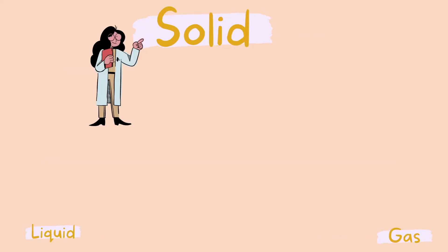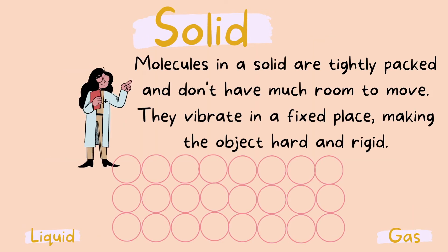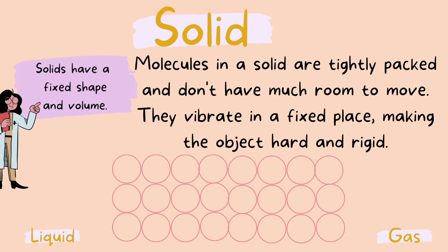So let's look at a solid first. Molecules in a solid are tightly packed and don't have much room to move around. In fact, they have no room to move around. Instead, they vibrate in place. Because they are vibrating, they still produce kinetic energy, just at a very low frequency. It is important to know that because the structure of a solid is rigid and does not have movement, solids have both a fixed shape and fixed volume.